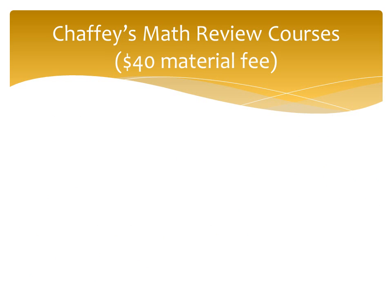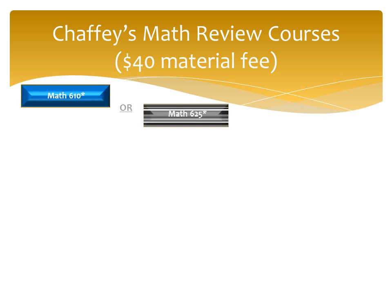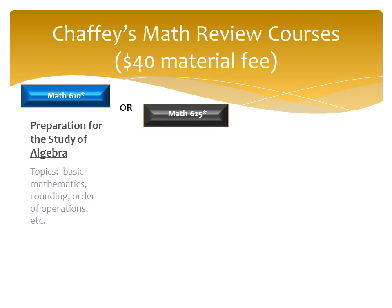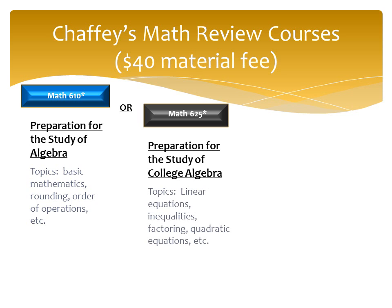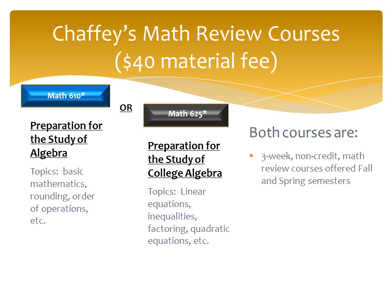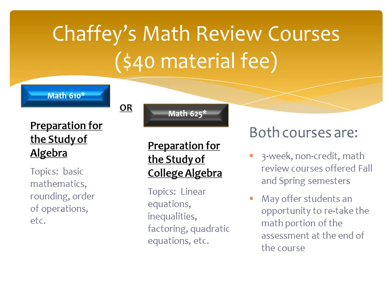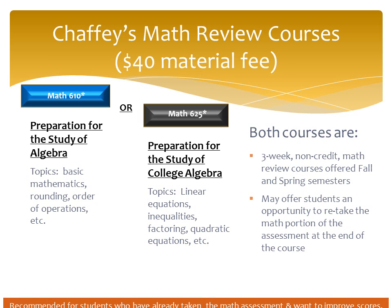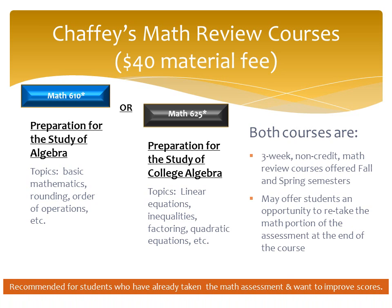The last resource is Chafee's math review courses: Math 610 or Math 625. Math 610 is a preparation for the study of algebra, and topics include basic mathematics, rounding, order of operations, etc. Math 625 is preparation for the study of college algebra, and topics include linear equations, inequalities, factoring, quadratic equations, etc. Both courses are three-week, non-credit math review courses offered fall and spring semesters, and may offer students an opportunity to retake the math assessment at the end of the course. These are recommended for students who have already taken the math assessment and want to improve their scores.